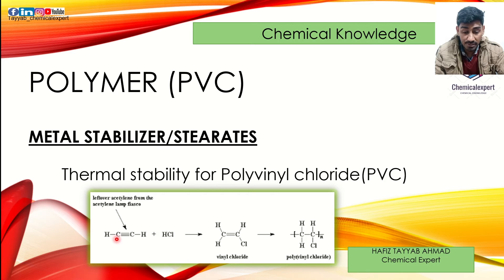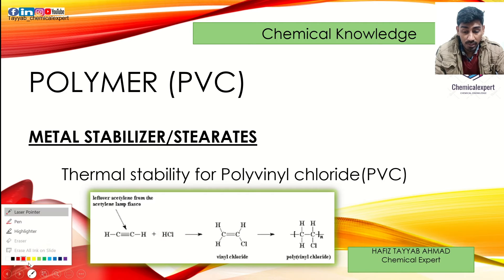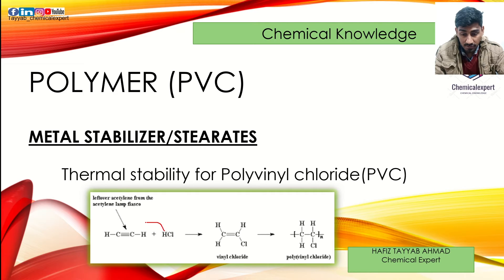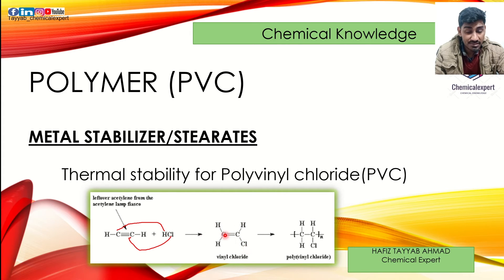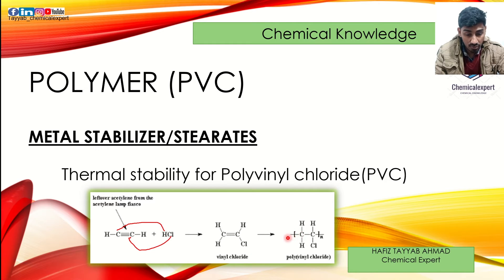When we add HCl into ethyne, one hydrogen attaches to one carbon atom and one chlorine attaches to the other carbon atom. You can see that hydrogen is attached here and chlorine is attached here, and the triple bond breaks. This gives us vinyl chloride from ethyne — a double bond structure where carbon has two hydrogens on one side and chlorine on the other.